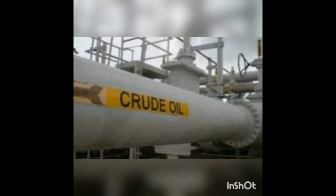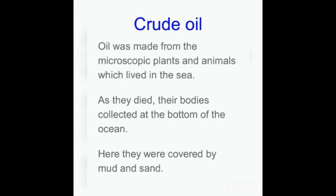Crude oil was made from microscopic plants and animals that lived in the sea. As they died, their bodies collected at the bottom of the ocean, where they were covered by mud and sand. The dead bodies of these plants and animals at the sea floor were covered by many thick layers of sand and mud.